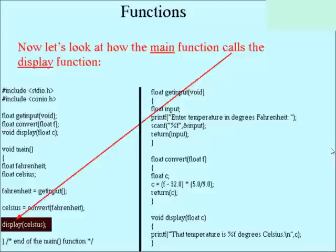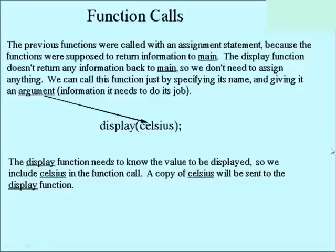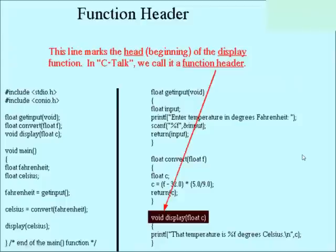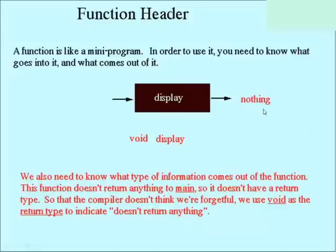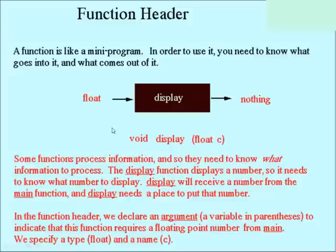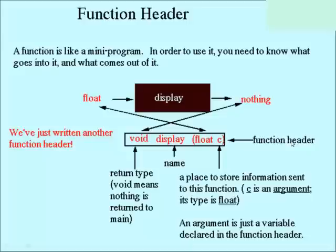Now let's see how the main function calls the display function. The other functions were called with assignment statements because they returned information to main. The display function doesn't return anything back to main, so we don't have to assign anything. We can call this function just by specifying its name and giving it the argument it needs. The display function's return type is void, and it takes a floating point number as input, so we declare a floating point variable in the header — that's the information it gets from the main function. So there's our third function header.